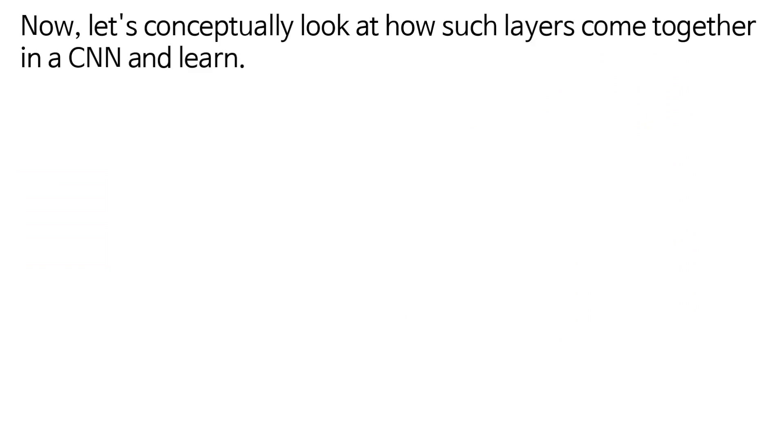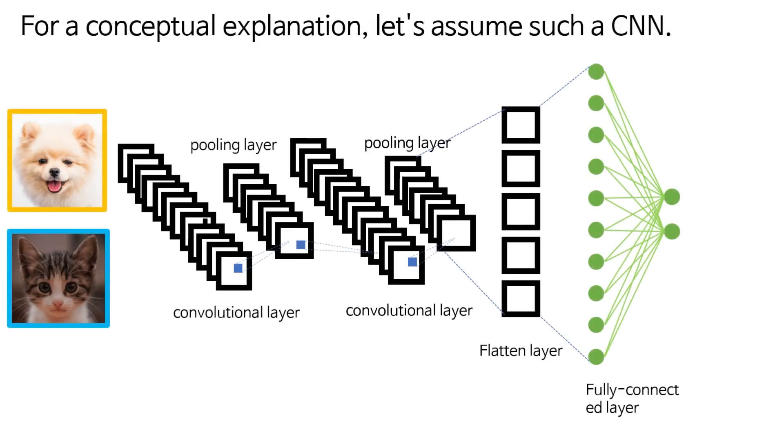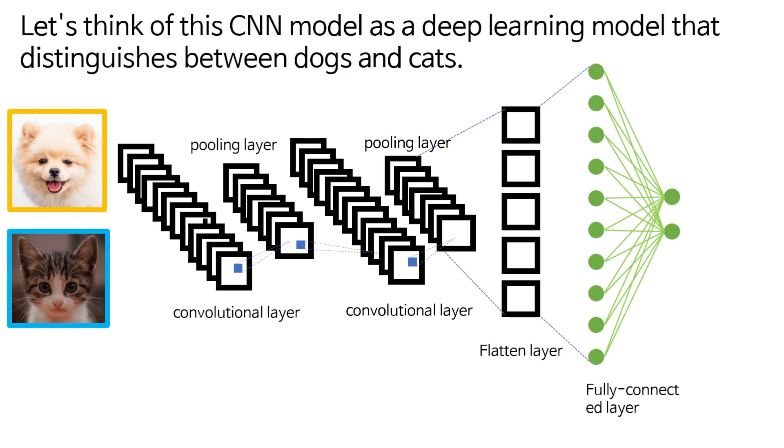Now, let's conceptually look at how such layers come together in a CNN and learn. For a conceptual explanation, let's assume such a CNN. Let's think of this CNN model as a deep learning model that distinguishes between dogs and cats.